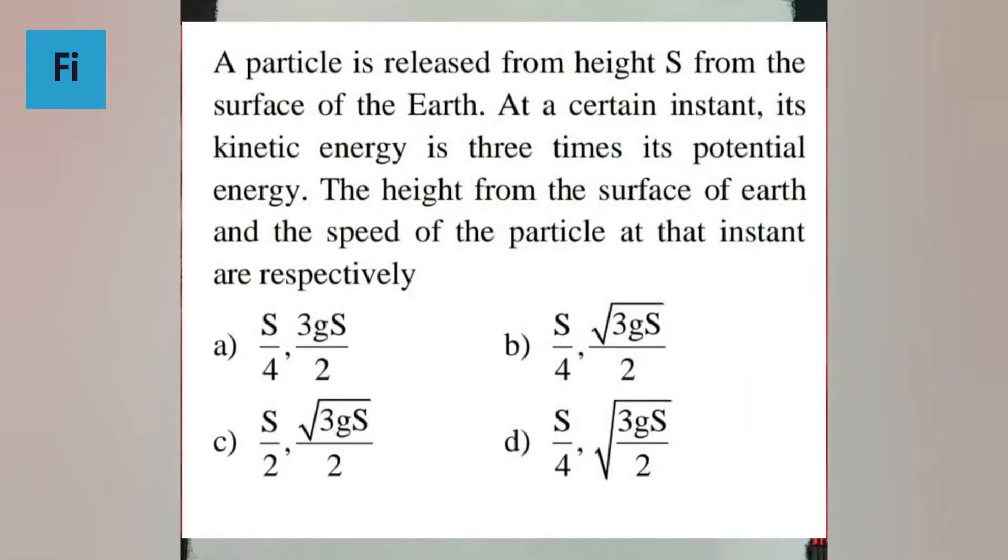The question says the particle is released from height s from the surface of the earth. At a certain instant its kinetic energy is three times its potential energy. The height from the surface of earth and the speed of the particle at that instant are respectively.